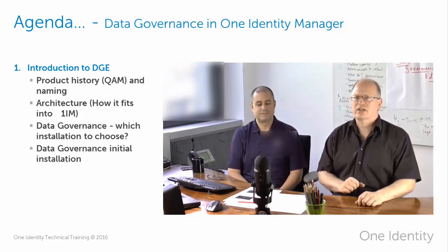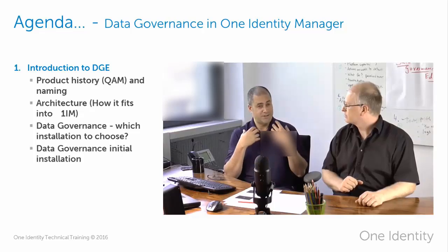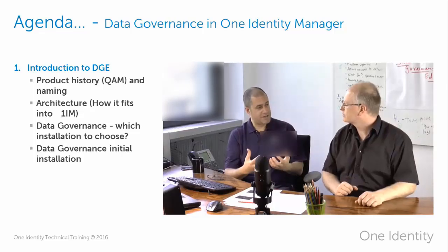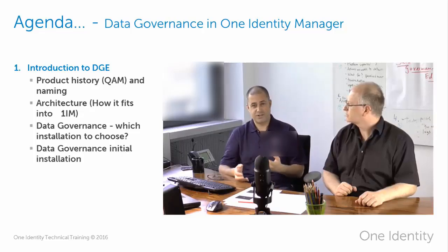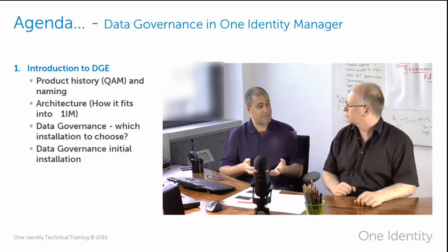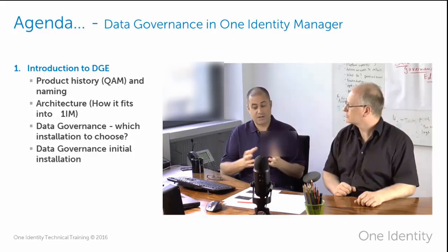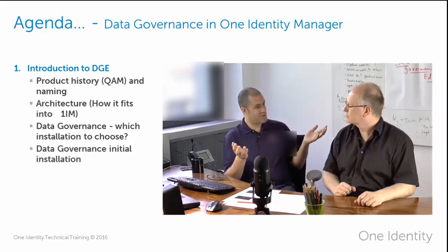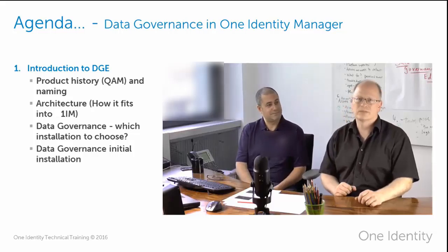Okay Matt, let's start with the first session. What will we see in the first session? So this first session, we're basically just going to give an overview of the architecture of DGE and how it fits into One Identity Manager. DGE is a little bit different in a lot of aspects, so we want to give an overview of that so people have an understanding of just how much DGE fits into the product. We'll also give a bit of a history of the product as well so that we understand how data governance came to be.